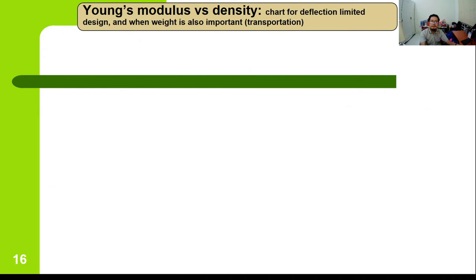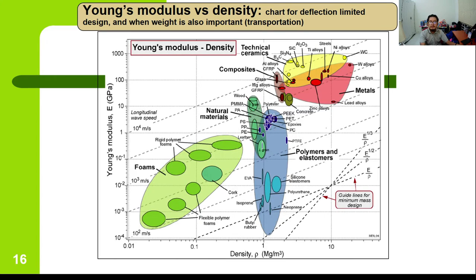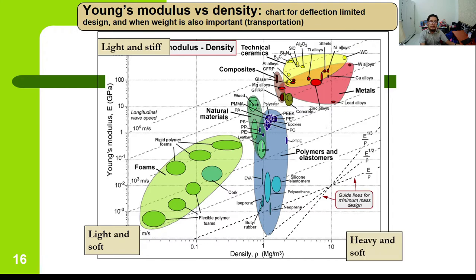The Young's modulus versus density chart is an important chart for deflection-limited design when weight is also important. Dividing the chart into four quadrants: materials in the upper left are light and stiff (high Young's modulus, low density); materials in the lower left are light and soft (low density, low Young's modulus); materials in the lower right are heavy and soft (high density, low Young's modulus); and materials in the upper right are very heavy and very stiff (high density, high Young's modulus).